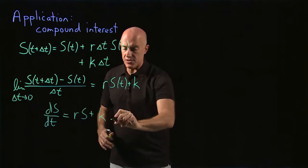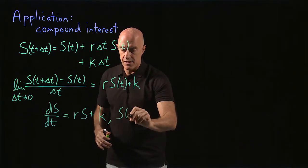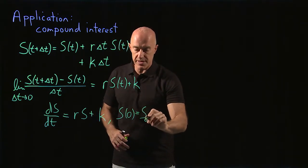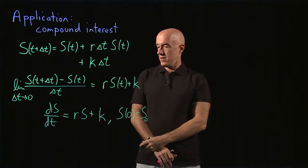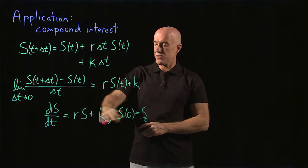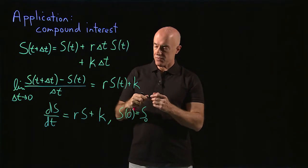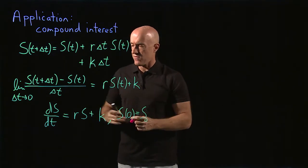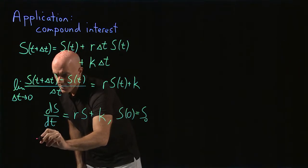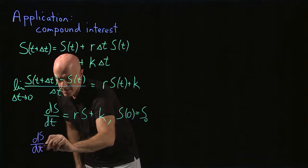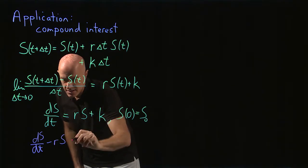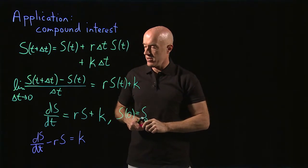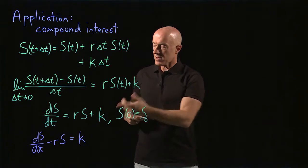To solve a first order differential equation we need to know how much money we had in the account initially at t equals zero. So s(0) we specify as s-naught. This is the compound interest equation, and we recognize it as a linear first order equation. We can put it in standard form: ds/dt minus r·s equals k, which is the standard form for a linear first order equation.